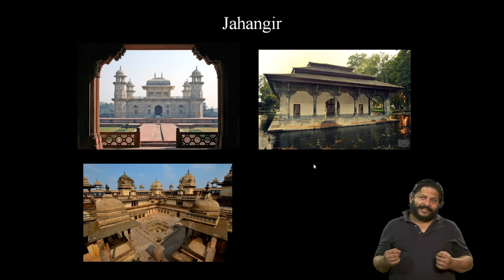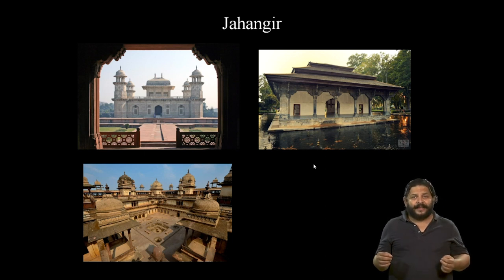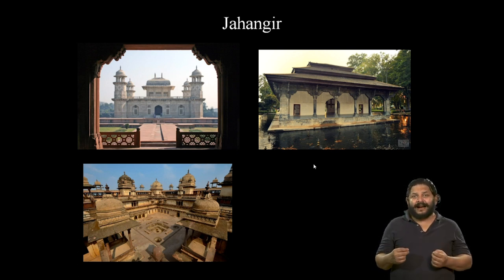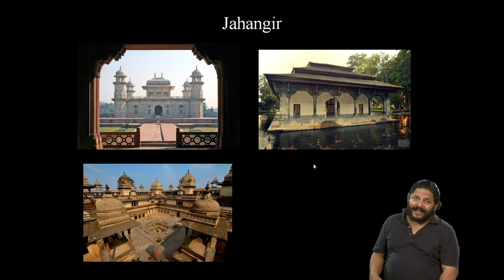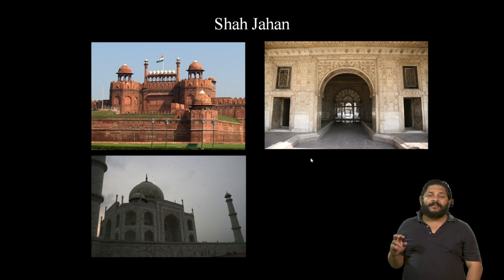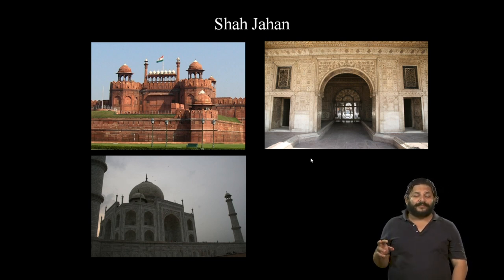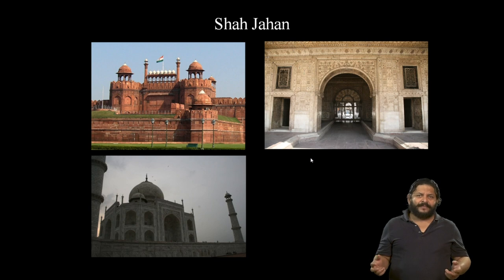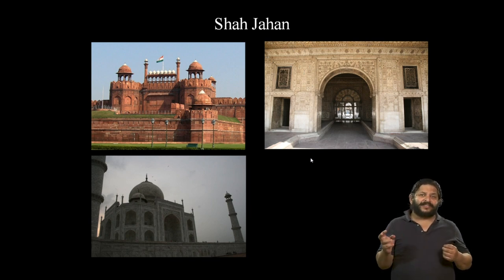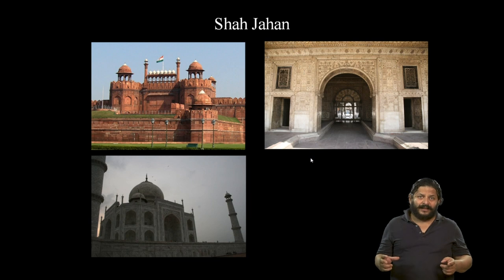Jahangir was an avid naturalist and a very good observer of phenomena around him. His diaries, the Tuzuk-i-Jahangiri, have fantastic descriptions of things that captivated him. It is his discerning eye that would allow even the building crafts to be a lot more nuanced than his predecessors. His son Shah Jahan, probably known as the greatest builder in all of the Mughal dynasty, presided over an empire that was enormous, powerful and very rich. He acceded to the throne and immediately embarked upon a massive program of building construction, constructing a grand new capital for himself in Delhi called Shahjahanabad on the banks of the Yamuna river.